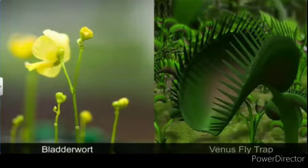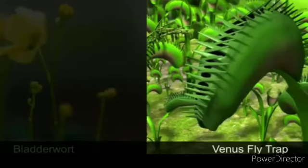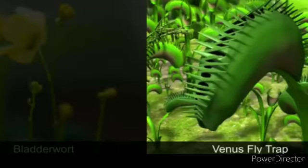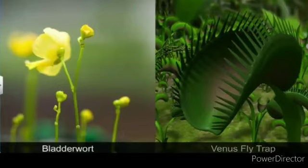Where nitrogen deficiency occurs, insectivorous plants absorb insects. The leaves contain enzymes that trap small insects, and from those insects they absorb nitrogen. So these are insectivorous plants. Examples include bladderwort and Venus flytrap.